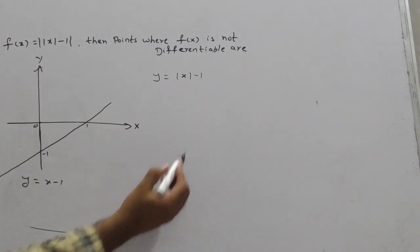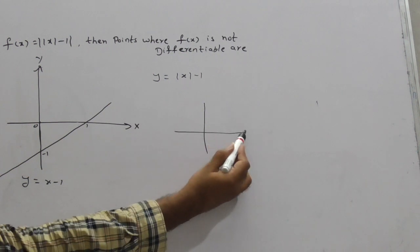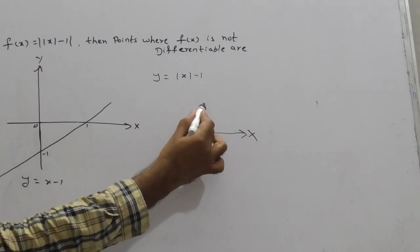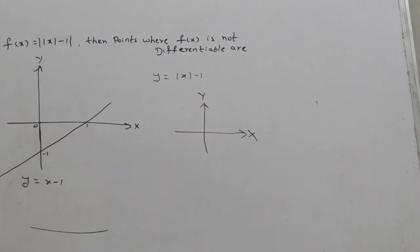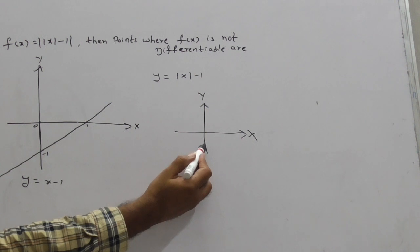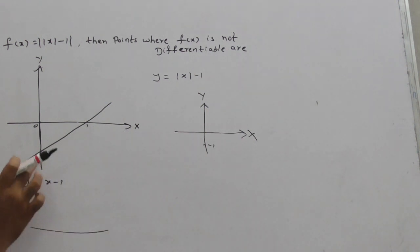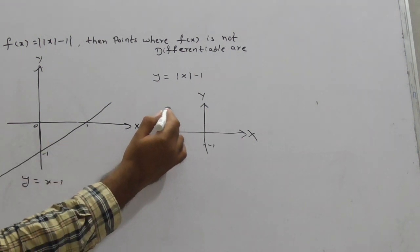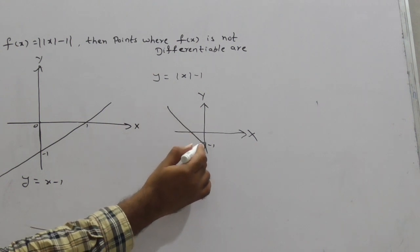How to draw y equals |x - 1|? Same graph, x-axis and y-axis here. This is the negative part - clearly this negative part goes up.